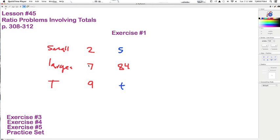So we can go 7 to 9. The ratio of 7 over 9 is the same as 84 over t. And again, we come back to multiplying the loop, dividing by what's left over. 84 times 9, 756. 756 divided by what's left over, 7, is 108. So the company has 108 total buses.